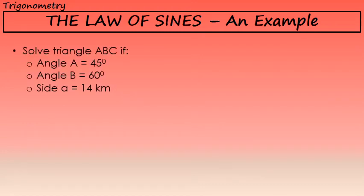Here we're being asked to solve triangle ABC if angle A is 45 degrees, angle B is 60 degrees, and side a, the side that is across from angle A, is 14 kilometers.